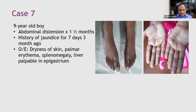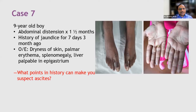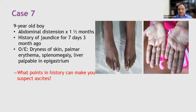Now, what points in history can make you suspect that you are dealing with ascites and not any other cause of distension? In these cases the distension could be because of gaseous distension, because of cholestasis and absorption or action of intestinal bacteria on unabsorbed sugars, or it could be because of organomegaly — hepatomegaly or splenomegaly. So what points in history can make you suspect that you are dealing with ascites?